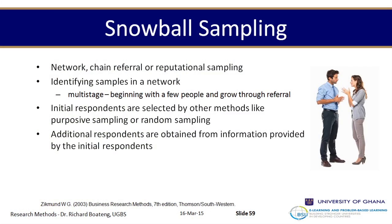Purposive sampling is also useful for cases that are difficult to find through randomization. For example, if I'm doing a study on people who own golf, the best approach is to go to a dealership or garage that repairs Volkswagen and identify clients from their list. If I find one person, the next step can be referral — which leads us to snowballing. Snowballing is a multi-stage sampling approach where the first person is found through purposive or random sampling, and subsequent participants are found through referrals, growing the sample like a rolling snowball.